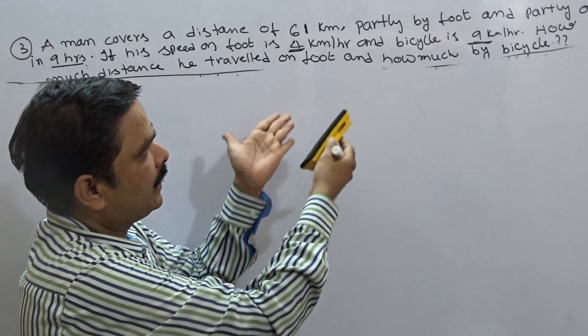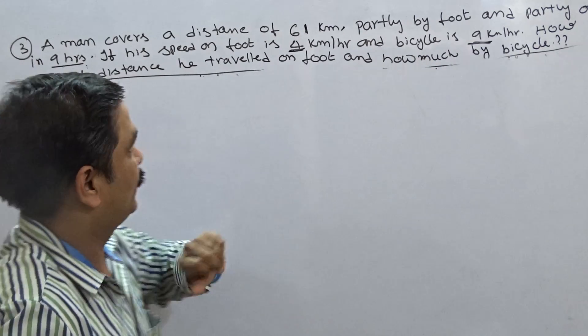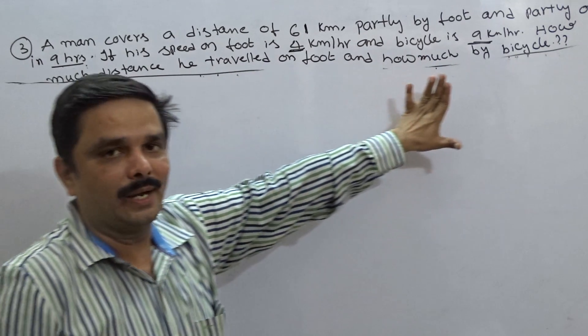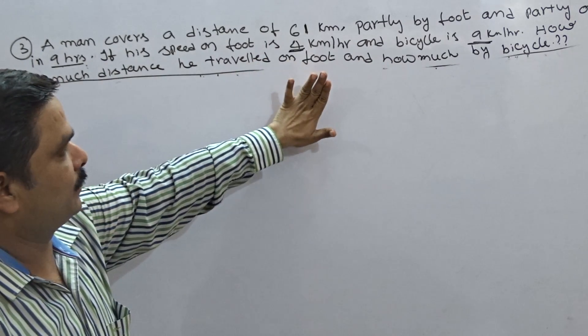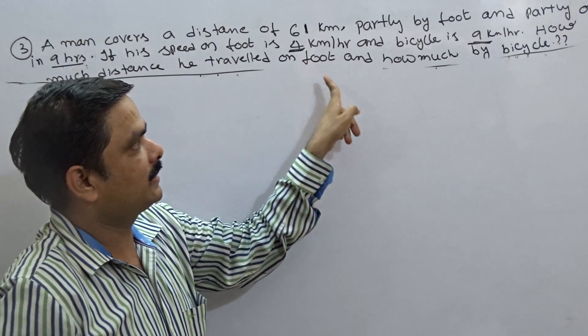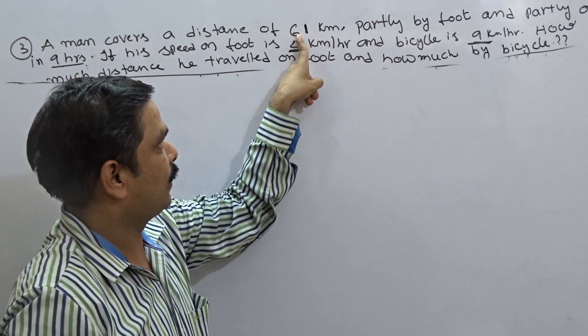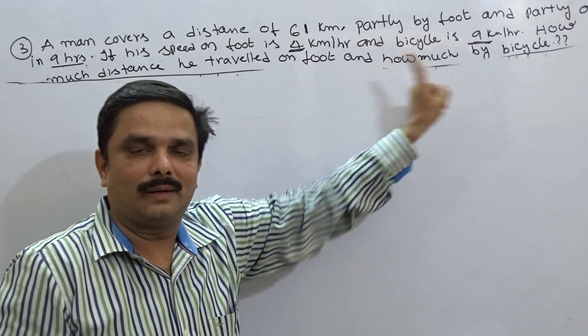Of course, this question can be solved with the pure mathematical way, the algebra method also. What is the algebra method for this one? Simply, I am just giving you the idea. I am not going to explain that method for you. Simple way with algebra: distance traveled by foot, if you take that one as x, distance traveled by bicycle is 61 minus x. Then you can frame one equation with that. You can get the answer.